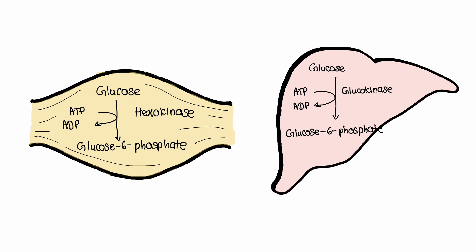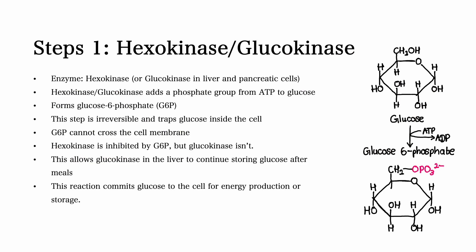Remember that glucokinase is found in liver and pancreatic cells. Therefore, in liver and pancreatic cells, glucokinase not being inhibited by glucose 6-phosphate allows the liver to continue storing glucose after meals where glucose levels are high. This reaction commits glucose to the cell for energy production or storage.